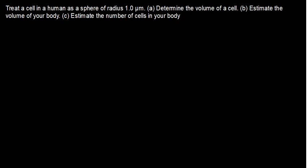In this tutorial, we are going to solve this question, which says: treat a cell in a human as a sphere of radius 1.0 micrometers. Part A: determine the volume of a cell. Part B: estimate the volume of your body. Part C: estimate the number of cells in your body.